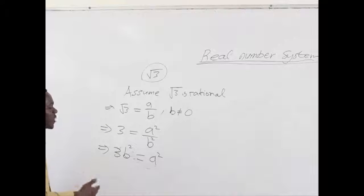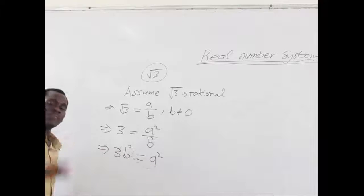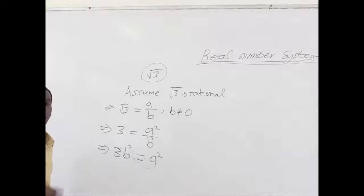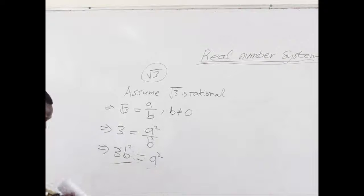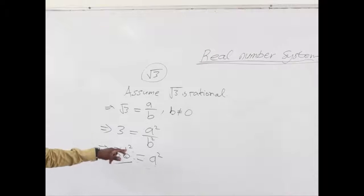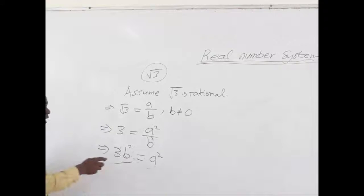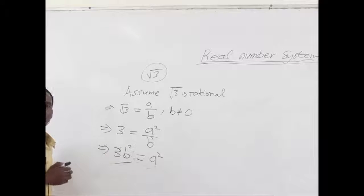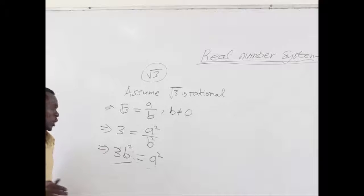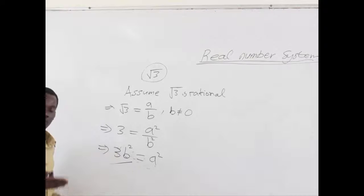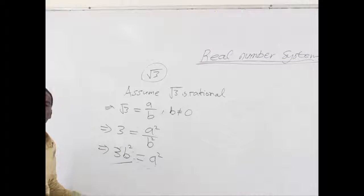Now, here we want to see whether B and A are even numbers or odd numbers. How can we determine that? Let's look at the left-hand side of the equation — we can see 3B squared. Here we can check if B squared is even or odd, so we have to choose one.